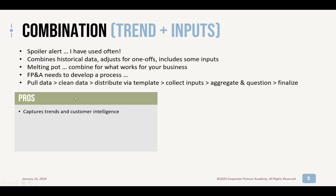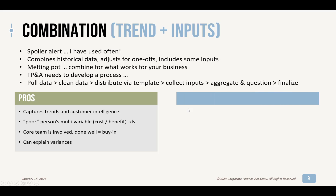The pros: it captures both trends and customer intelligence, and it's done in a fairly time- and cost-effective manner if you have a good process. It's kind of a poor person's multivariable analysis — slightly less benefit, but for much less cost. You're probably going to do this in Excel, so you don't have to purchase or train on special software. Your core team is involved: the FP&A team, the sales team. If you do it well, you have buy-in, people are working towards something, and you should be able to explain variances — you've made some assumptions, gotten some intel, so if you miss over or under, you can explain why.